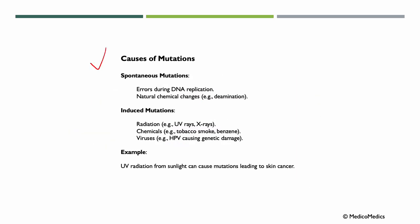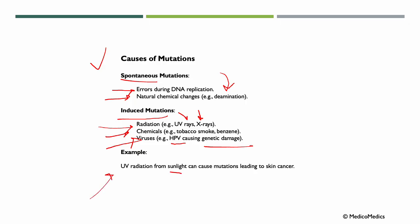What are some causes of these mutations? We have spontaneous mutations — errors during DNA replication. We have natural chemical changes, like deamination. We have induced mutations caused by, for example, radiation like UV rays or X-rays, chemicals like tobacco smoke or benzene, and viruses like HPV causing genetic damage. For example, UV radiation from sunlight can cause mutations leading to skin cancer.